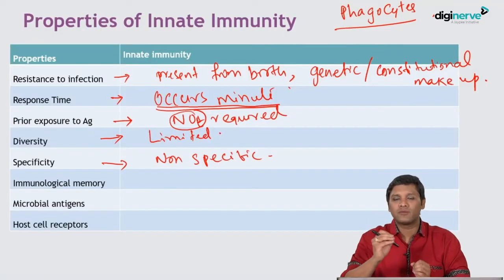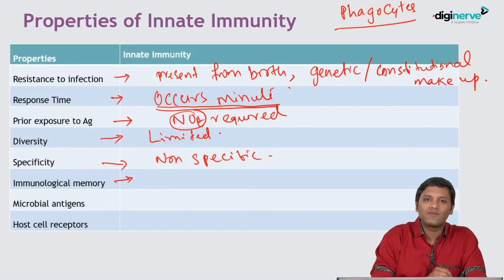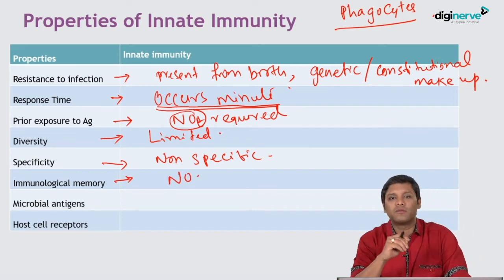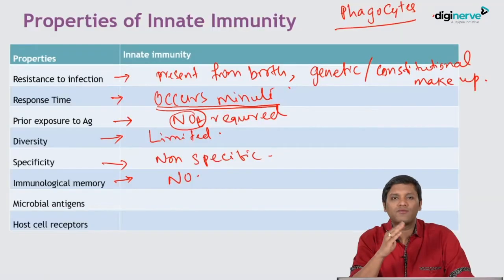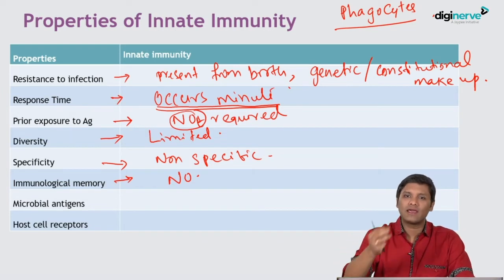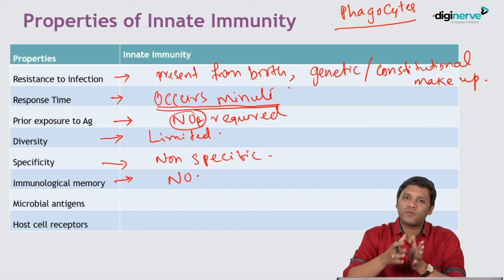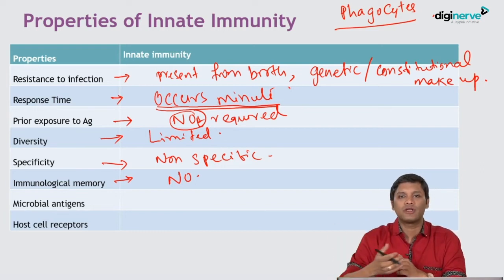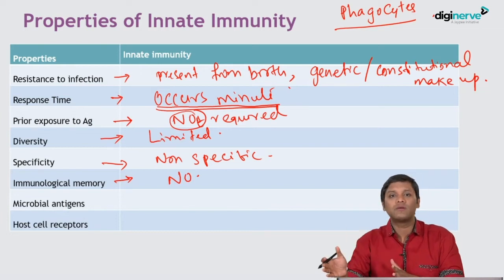The cells mediating innate immunity, like phagocytes or NK cells, can act only against a few limited types of antigen epitopes. Another important difference is that there is no immunological memory in innate immunity. If the same infection occurs again and again, the innate immunity response will remain the same — it will not be faster in subsequent infections. In contrast, acquired immunity has immunological memory following the primary contact, so if the same infection occurs again, the acquired immunity response will be faster.